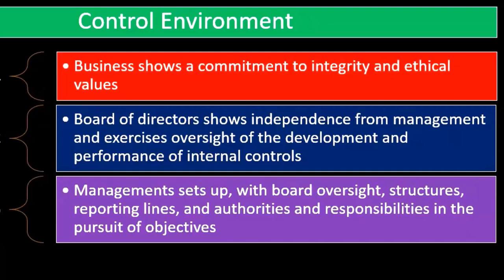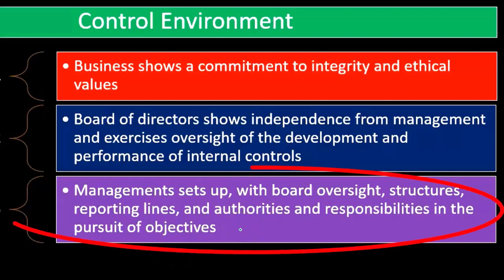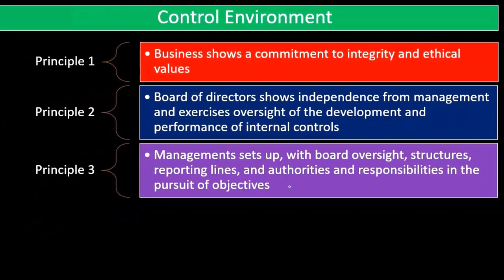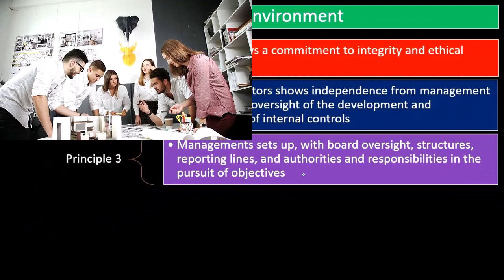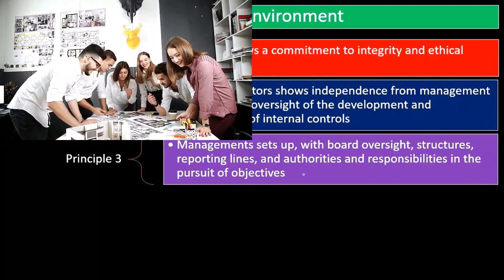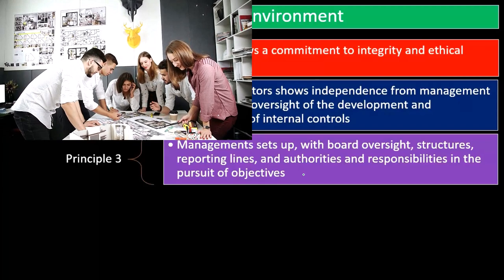Third principle: management sets up, with board oversight, structures, reporting lines, and authorities and responsibilities in the pursuit of objectives. We have the business hierarchy and reporting lines within it. Authorities and responsibilities are really important because people need to understand their specific roles. It's a basic thing, but oftentimes people don't have a good idea of what their responsibilities are.